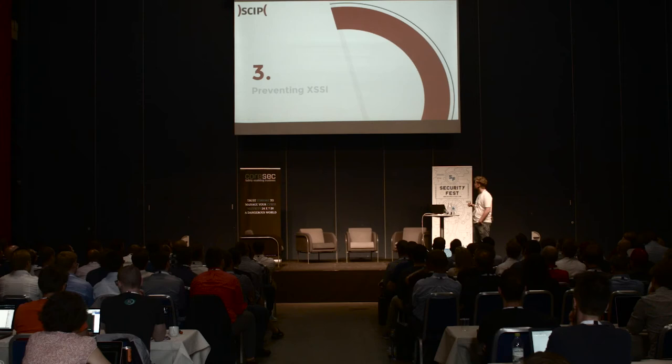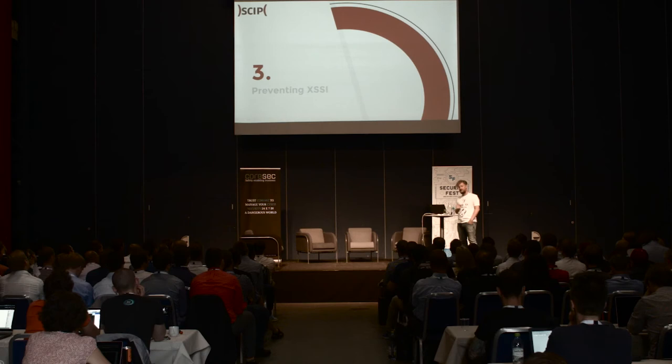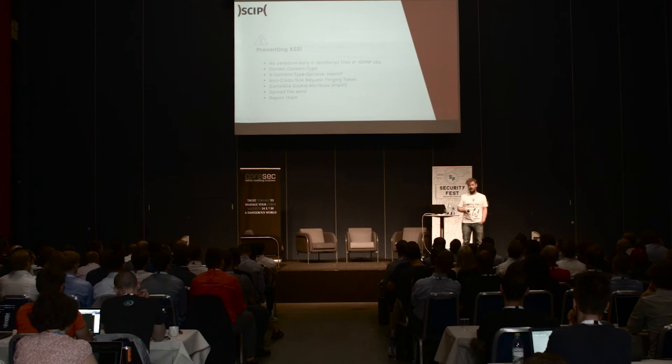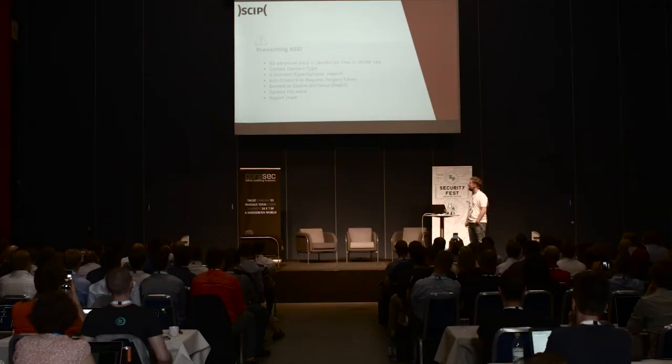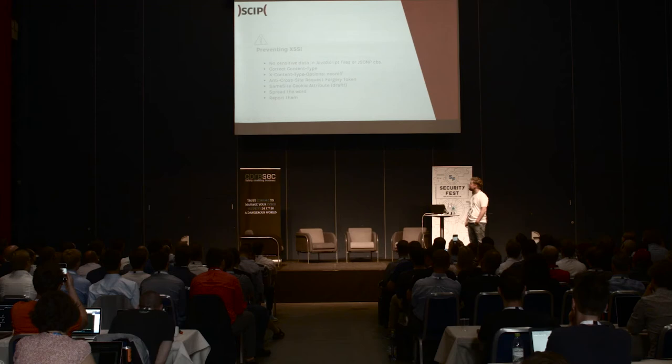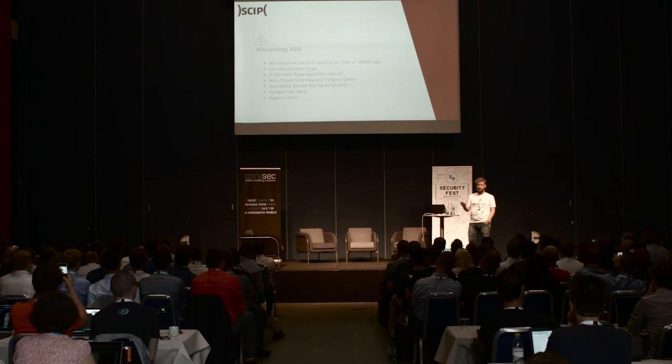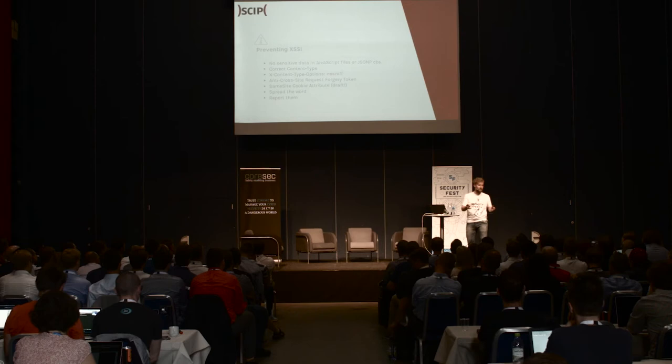The easiest way for developers is to never put sensitive data into JavaScript files. JavaScript files, by design, are made to be accessible across sites — if they contain sensitive data, it will be leaked. Other mitigations include setting a correct content type so that UTF-7 attacks don't work on other browsers, and using the X-Content-Type-Options nosniff header. If you have an anti-CSRF token, that also works the same way — for authentication-based cross-site script inclusion, it stops it right there.